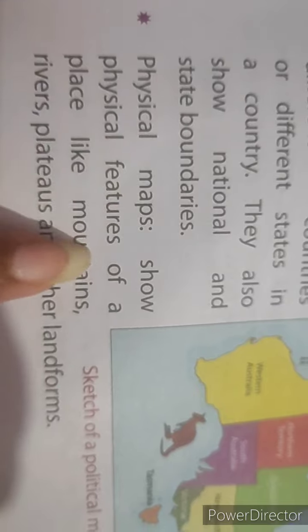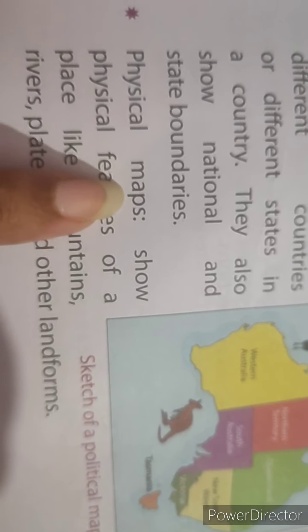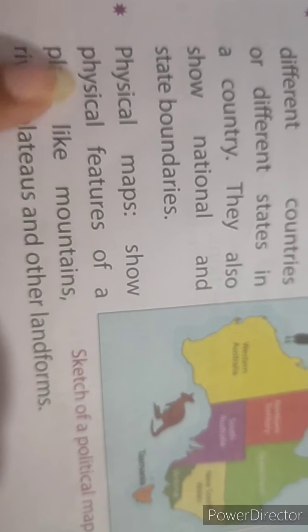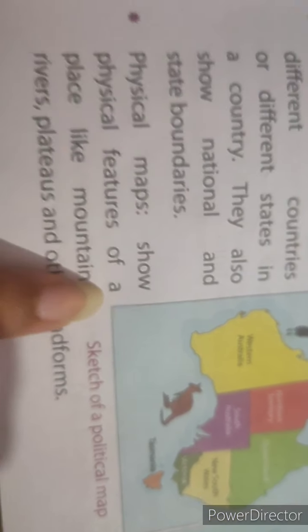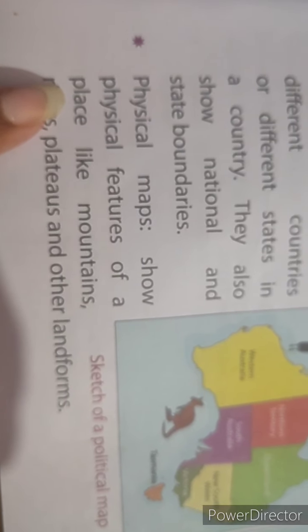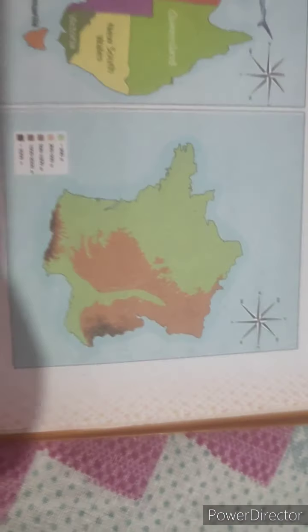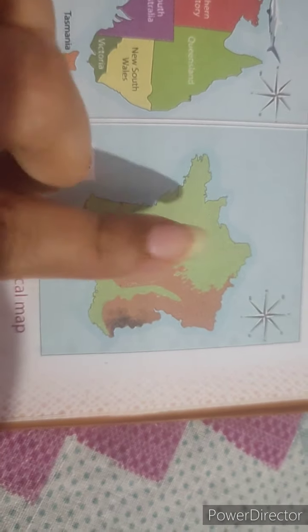Next is physical maps. Physical maps show the physical features of a place, such as mountains, rivers, plateaus, and other landforms. Here you can see the picture of a sketch of a physical map.